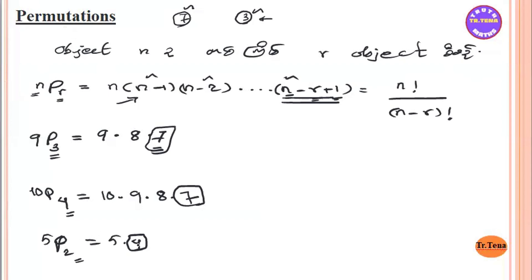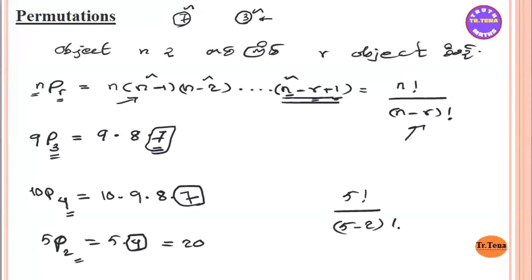So if we use the factorial formula, NPR equals N factorial by N minus R factorial. For 5P2: 5 factorial by 5 minus 2 factorial, which is 5 factorial divided by 3 factorial. 5 factorial is 5×4×3×2×1, and 3 factorial is 3×2×1, which cancels.